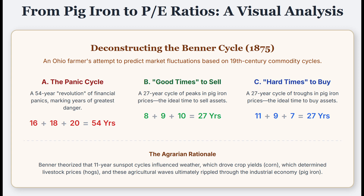He also had a longer panic cycle — a 54-year pattern for major financial crises. He said panics cycled through with a major panic, then another 16 years later, then 18 years after that, then 20 years after that — totaling 54. He pegged this to the big 19th-century panics he knew: 1819, 1837, 1857, and the one that ruined him, 1873.